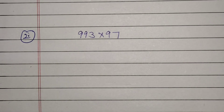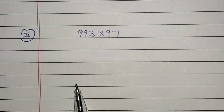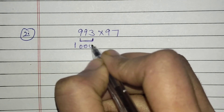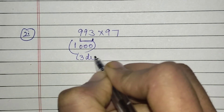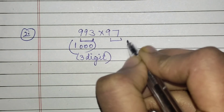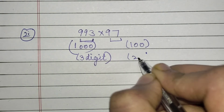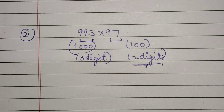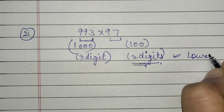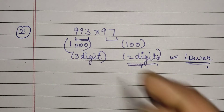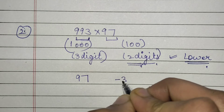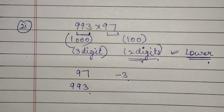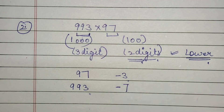Let us solve another example — you have to be very careful about the base value. This number has base 1000, meaning 3 digits are there, and this value is near to 100, meaning 2 zero digits are there. So the lower base is 100. Now, 97 is how much lesser than 100? It is lesser by 3. And 993 is how much lesser than 1000? It is lesser by 7.